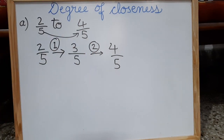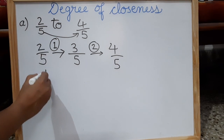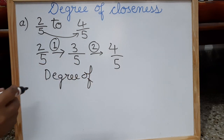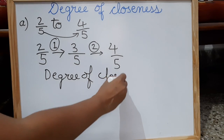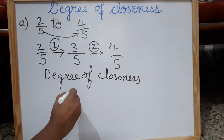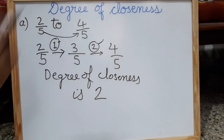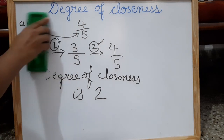So how many steps did you move to reach from 2 by 5 to 4 by 5? It is two steps. So the degree of closeness of 2 by 5 to 4 by 5 is 2.